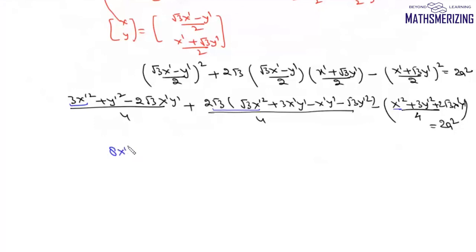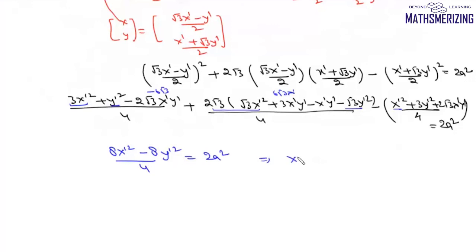Collecting terms: X dash² coefficients give 3 plus 6 minus 1 equals 8X dash². Y dash² coefficients give 1 minus 6 minus 3 equals minus 8Y dash². The X dash Y dash cross terms cancel out. So we have 8X dash² minus 8Y dash² over 4 equals 2a squared, which simplifies to X dash² minus Y dash² equals a squared. Therefore, if the axes are rotated by 30 degrees anti-clockwise, the new equation of this curve is x² minus y² equals a².